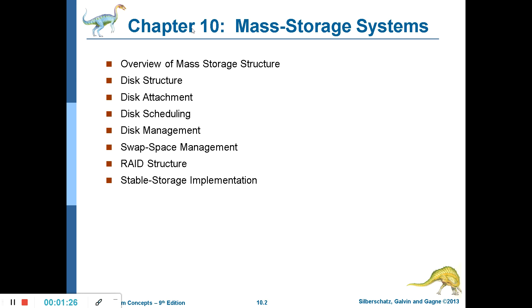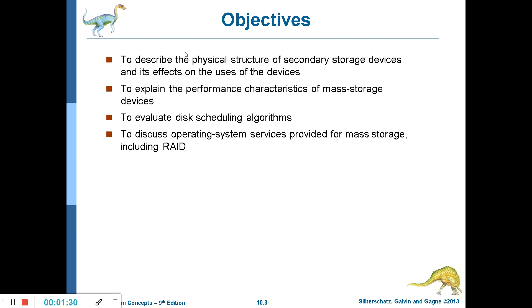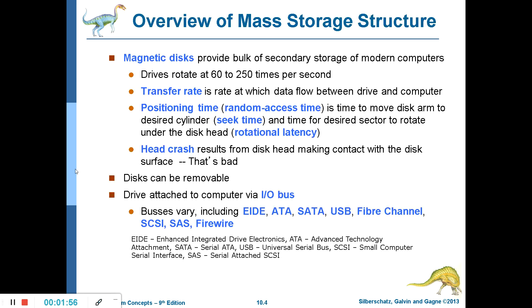Let me briefly describe the objectives of this chapter: to describe the physical structure of secondary storage devices and its effects on usage; to explain the performance characteristics of mass storage devices; to evaluate disk scheduling algorithms; and to discuss operating system services provided for mass storage.